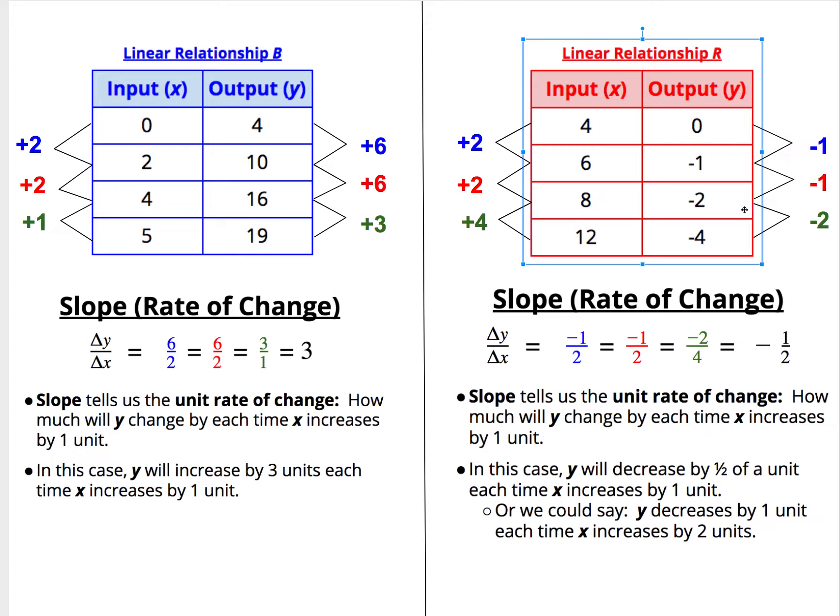In the final row, the y decreases by two units, while the x increases by four units. We see when we put these measurements, these rates of change into a fraction, in the form y change over x change, every fraction or every rate of change is equivalent. They all simplify to negative one over two.